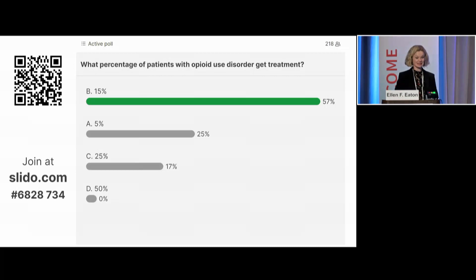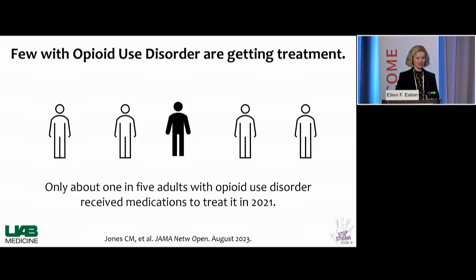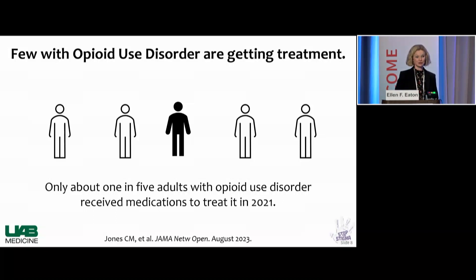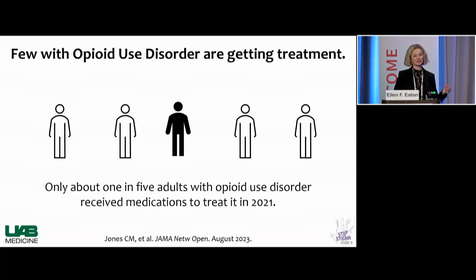We see a significant minority being treated. Only about one in five with opioid use disorder — 15 to 20 percent, depending on the data you look at — are getting treatment for opioid use disorder. Prior to us opening the clinic, the vast majority of my patients did not have another clinic, so they weren't transferring in. They were new to care because we provided a new integrated opioid treatment clinic within an HIV clinic.